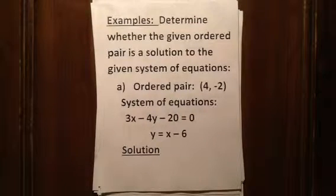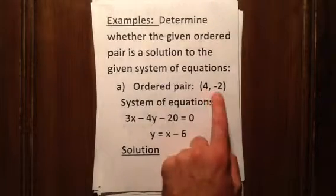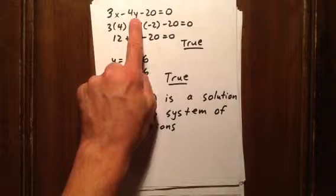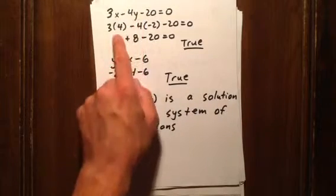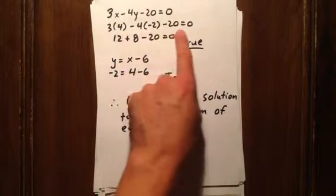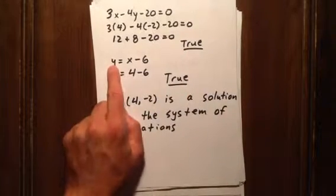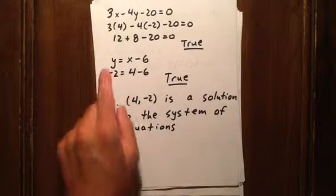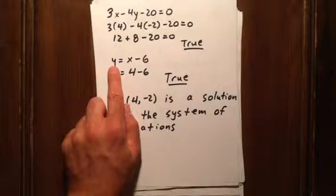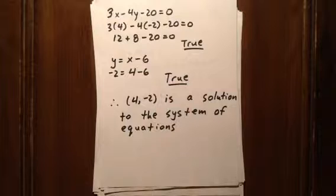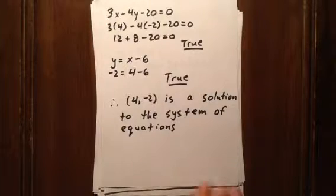In this first example, we determine whether the ordered pair (4, -2) is a solution to the given system of equations. We plug in 4 for x and -2 for y. In the first equation we get 12 plus 8 minus 20 equals 0 — true. In the second equation, y equals x minus 6, we get -2 equals 4 minus 6 — also true. So (4, -2) is a solution to the system of equations.